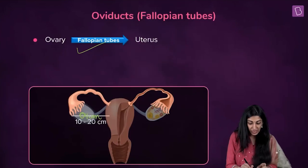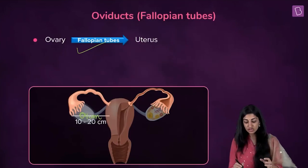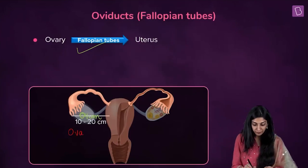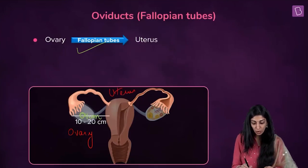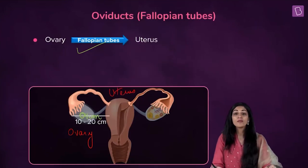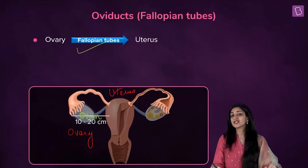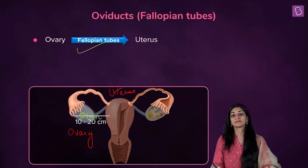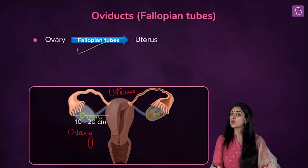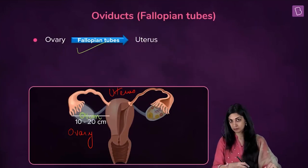Fallopian tubes are a connection between the ovary and the womb of the mother, or uterus. The womb of the mother is self-explanatory — here the child is going to grow. The zygote is going to grow in the uterus.